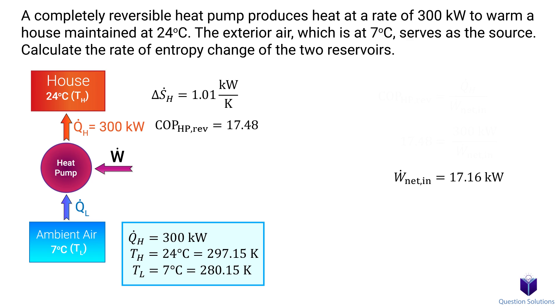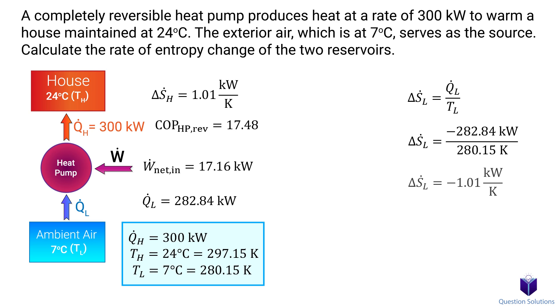We can finally get our QL by using this equation, which says the network is the difference between QH and QL. Plugging in our values and solving gives us our QL. Now we can calculate the change in entropy. Let's plug in our values but keep in mind that the cold reservoir is losing 282 kilowatts of energy so it's negative. Let's solve and that gives us the entropy change of the cold reservoir.